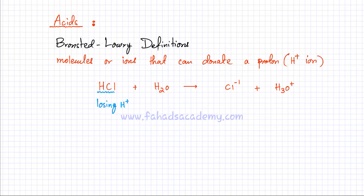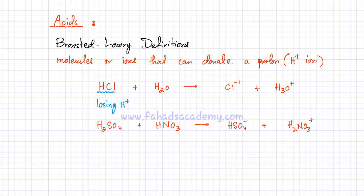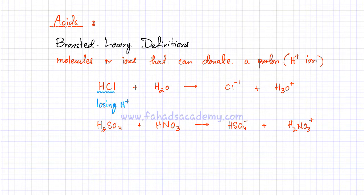Let's look at another equation. Take H2SO4, which is sulfuric acid, reacting with nitric acid, HNO3 — which is also an acid. When these two react, H2SO4 produces HSO4-1 and HNO3 gains an H+1 to become H2NO3+. If you look carefully, H2SO4 is losing its H+1 ion — one H+1 is missing from the product. So in this reaction, it is sulfuric acid that is acting as the Bronsted-Lowry acid.